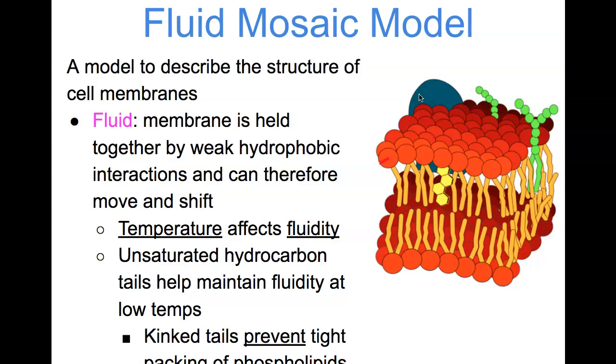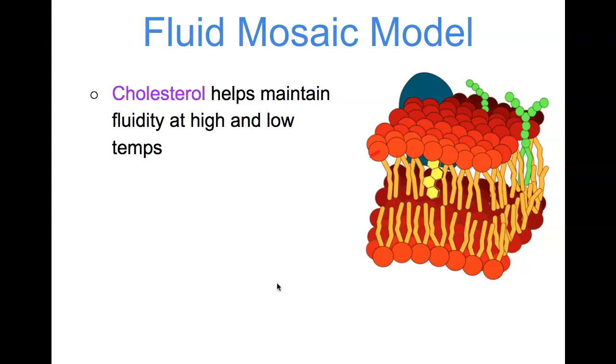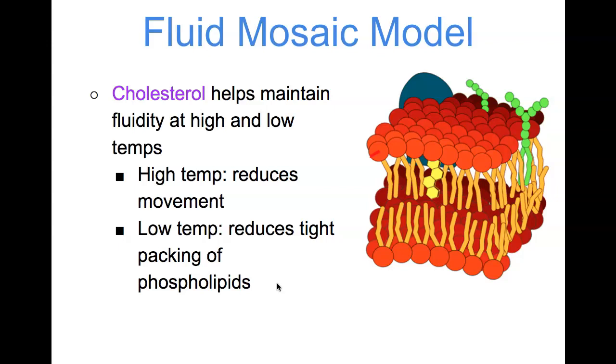You also have kinktails. Remember that you get kinktails when you have carbon-carbon double bonds. Kinktails are going to prevent tight packing of phospholipids within the cell membrane itself. The other thing that adds into the structure of the cell membrane is cholesterol, and cholesterol is going to help maintain fluidity at high and low temperatures. At high temperatures, cholesterol will help reduce movement. But in lower temperatures, it reduces the tight packing of phospholipids with each other.